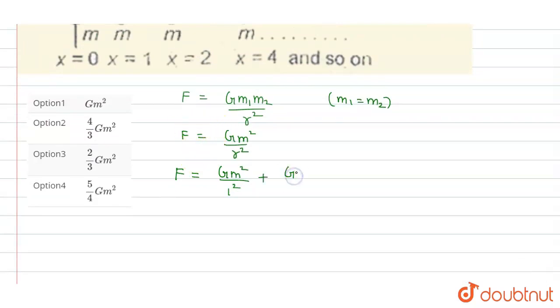...plus capital G m squared by 4 squared, and so on, where G is our gravitational constant and m is the mass of the point mass.